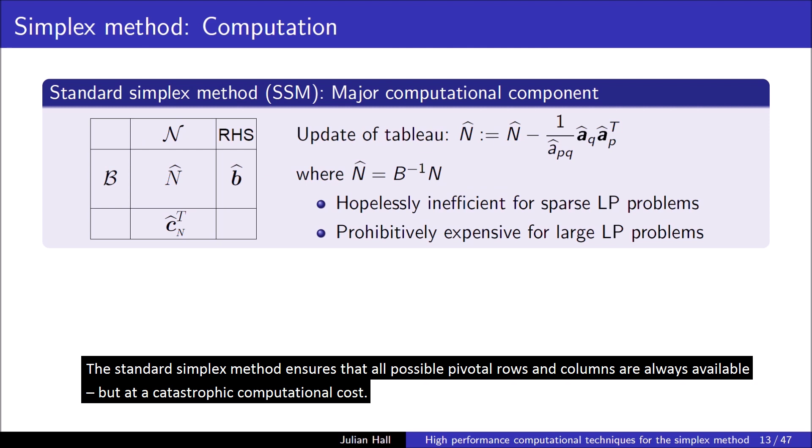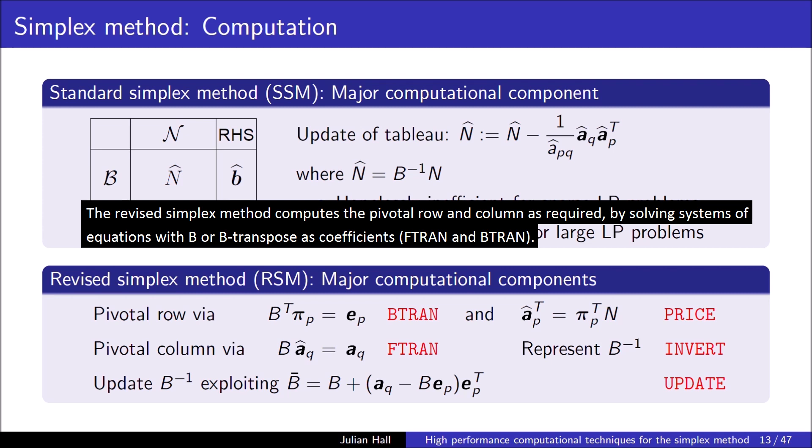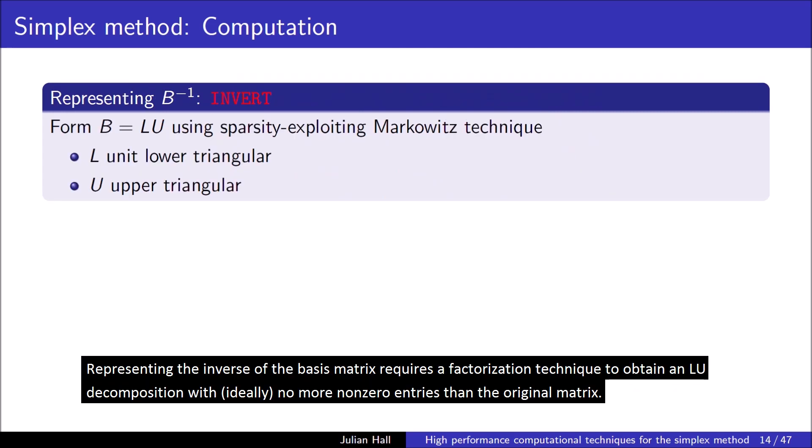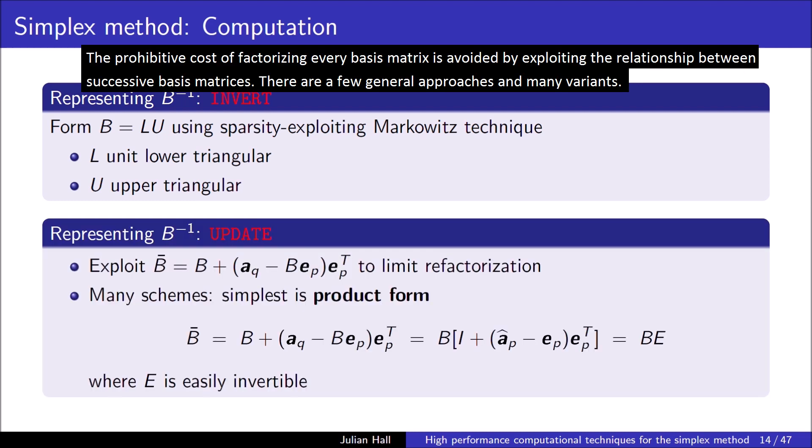The standard simplex method ensures that all possible pivotal rows and columns are always available, but at a catastrophic computational cost. The revised simplex method computes the pivotal row and column as required by solving systems of equations with B or B transpose coefficients. This requires an invertible representation of B. The pivotal row is then formed via a matrix vector product with the sparse matrix N.